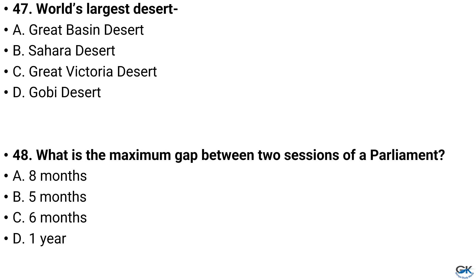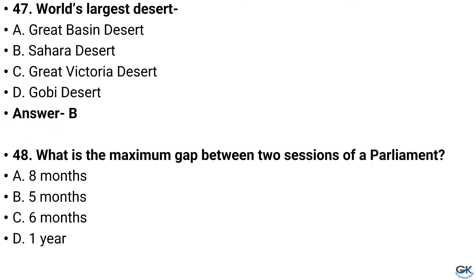Question number 47. World's largest desert? Option A: Great Western Desert, Option B: Sahara Desert, Option C: Great Victoria Desert, Option D: Gobi Desert. And the answer is Option B: Sahara Desert.